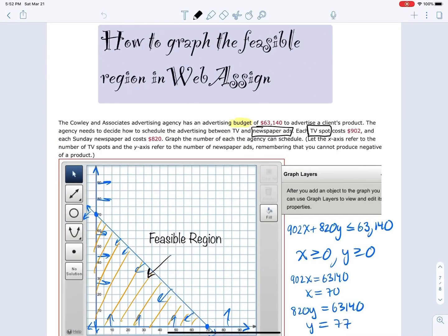I want to show you how to graph the feasible region in WebAssign. This feasible region you can see here, the orange shaded area, is what you get when graphing a system of inequalities.